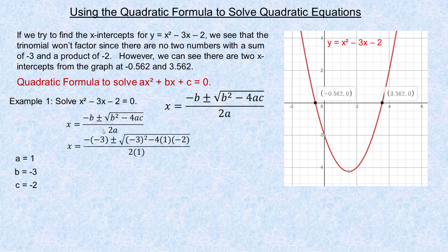So let's substitute the values in. b is negative 3, so negative 3 goes in both places. Minus 4 times 1 times negative 2, and over 2a, so 2 times 1 in the denominator. The negative of negative 3 is positive 3. Negative 3 squared is 9 — that's negative 3 times negative 3. And 4 times 1 is 4, times 2 is 8. There are two negatives in this product, so it ends up being plus 8. And 9 and 8 add to 17.